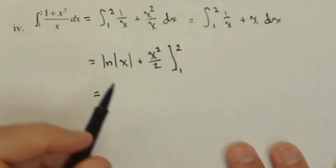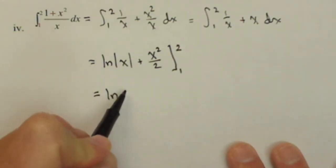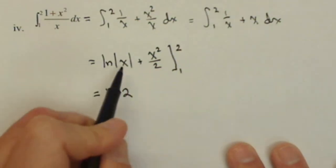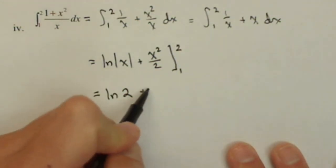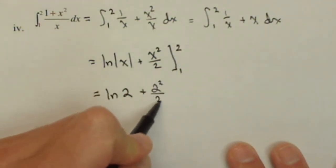Now we'll put in our limits and take the difference and see if we can do any simplifying. So we got the natural log of two. I don't need the absolute value because two is positive. ln of two plus two squared over two minus.